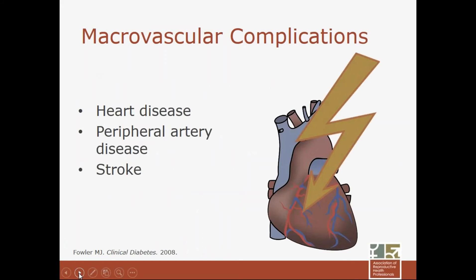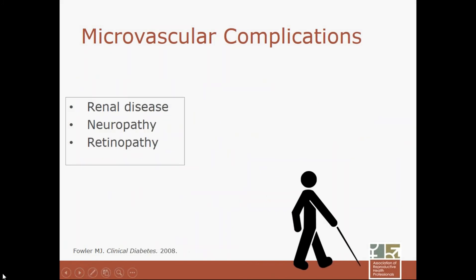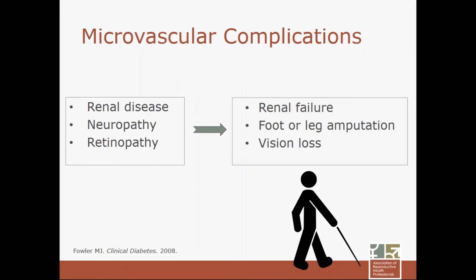All of these types of diabetes carry risk of macrovascular complications, including heart disease, peripheral artery disease, and stroke, as well as microvascular complications such as renal disease, neuropathy, and retinopathy — that is, kidney, nerve, and eye disease. People who keep their sugars well controlled are able to delay the progression from early kidney weakening to renal failure, from early neuropathy to ulcers requiring amputation, and from early retinopathy to vision loss — all common late-term sequelae of diabetes.